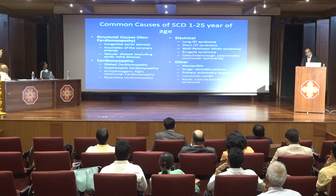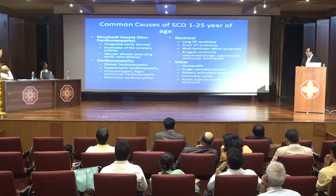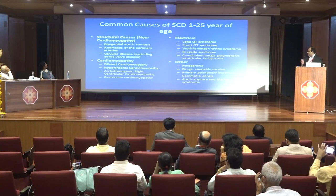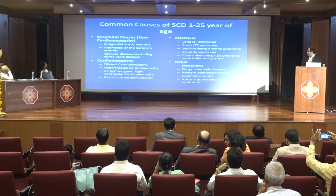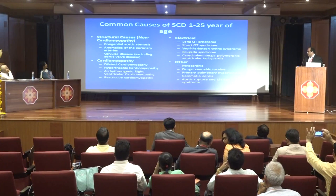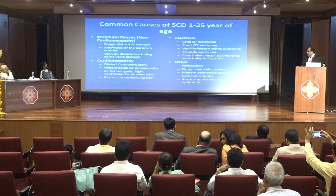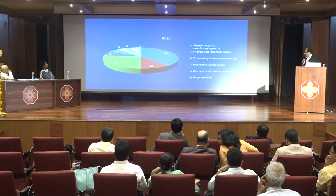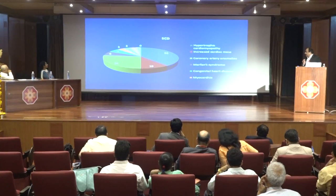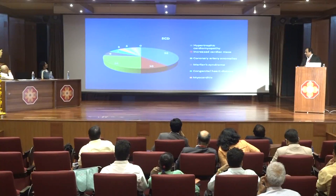In the 1 to 25 years age group, these causes persist and additional ones are added, including arrhythmogenic RV cardiomyopathy, restrictive cardiomyopathy, short QT syndrome, Brugada syndrome, catecholaminergic polymorphic VT, commotio cordis, aortic rupture, and Marfan syndrome. In athletes, the most common cause — accounting for 36% of cases — is hypertrophic cardiomyopathy, followed by coronary artery anomalies.